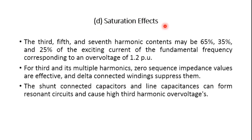Next is the saturation effect. Whenever voltages above the rated value are applied to transformers, the magnitude of the magnetizing current increases rapidly — possibly up to the full load rated current for 50% overvoltage. The magnetizing current is not sinusoidal in nature but has peaked waveforms. The third, fifth, and seventh harmonics may contain 65%, 35%, and 25% of the exciting current at fundamental frequency, corresponding to fluxes of 1.2 times the rated magnetic value for the third harmonic and its multiples.